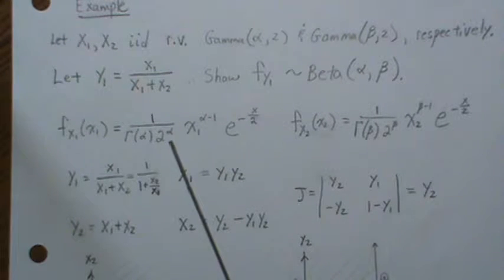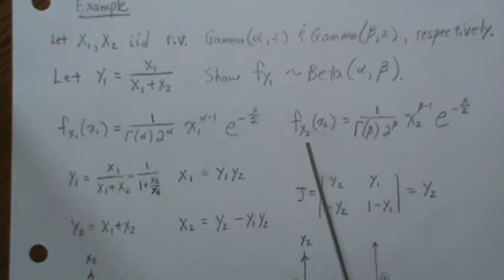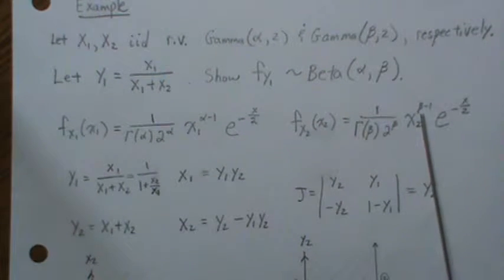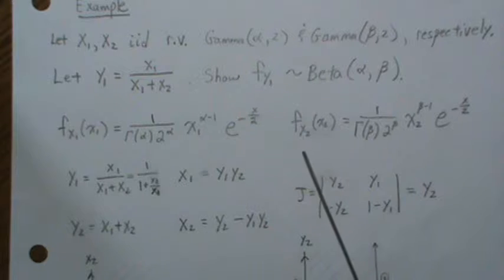So this is a gamma distribution with parameter α and β equal to 2. And X2 is a gamma distribution with parameter β and then the second parameter is 2.